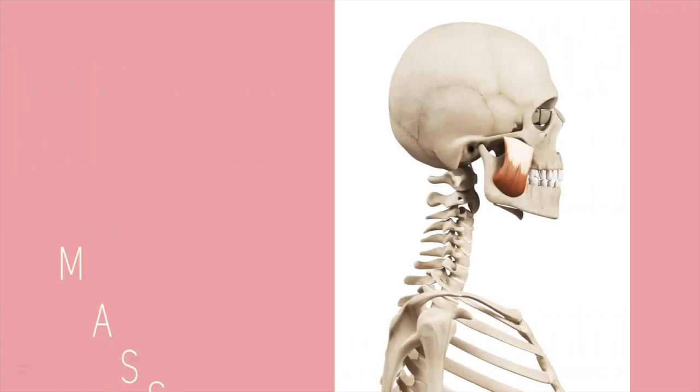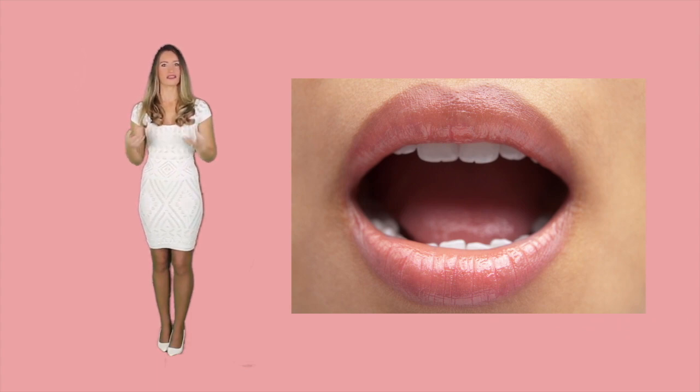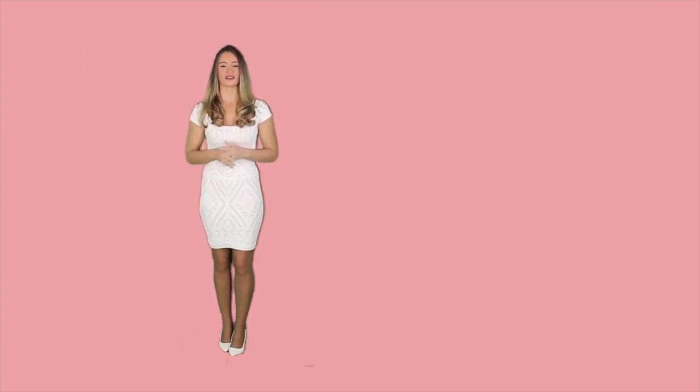The masseter is a second muscle, which is much thicker and flatter. It has fibers arising from the zygomatic arch up to the mandible bone. It functions as a jaw-raising muscle and regulates the opening and closing of the jaw due to the action of gravity.